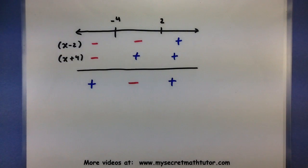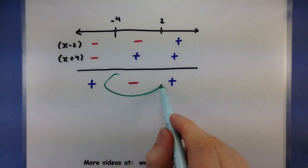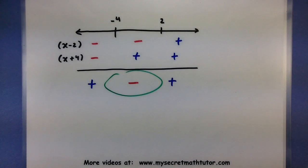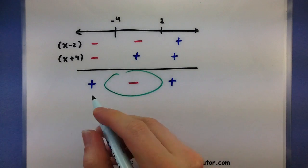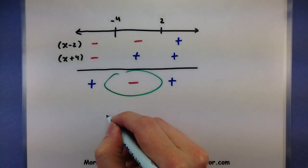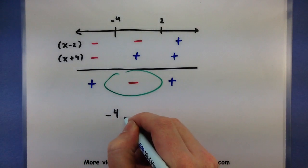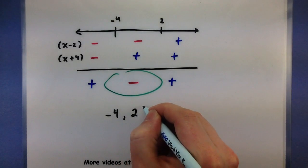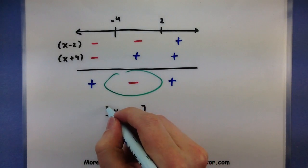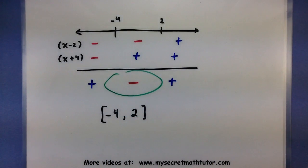All right, so looking back at this, I only have one negative interval. So this is what I want to use in my solution. So let's see. I'm looking at all of the values from negative 4 up to 2, and I could include either one of those. So this interval represents my solution set to the quadratic inequality.